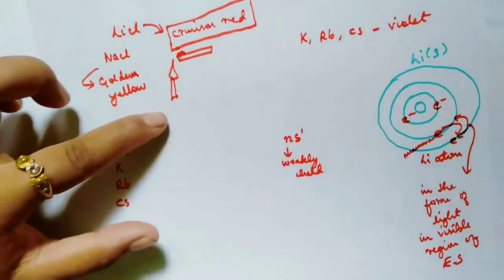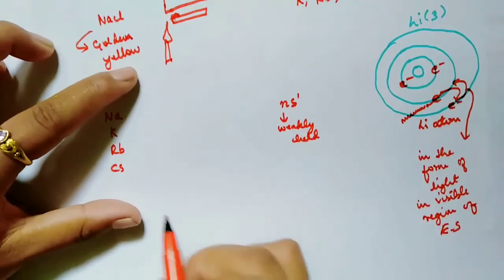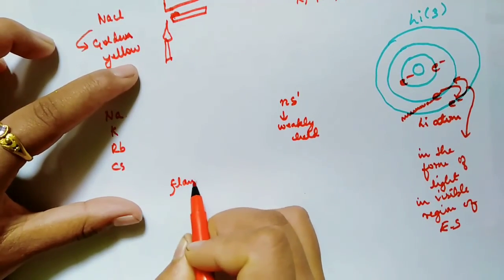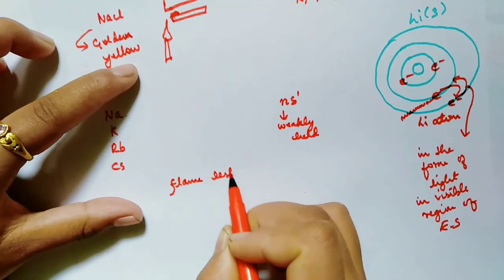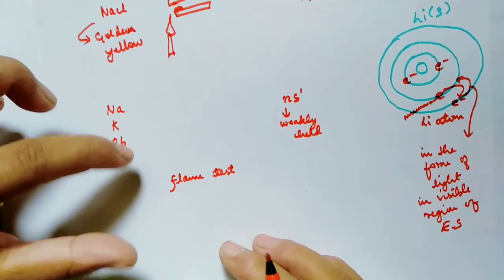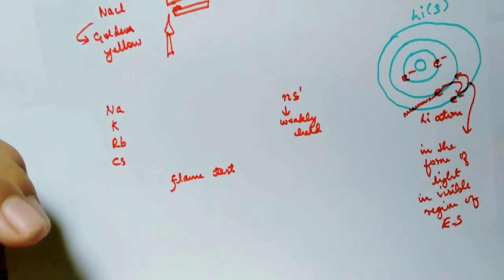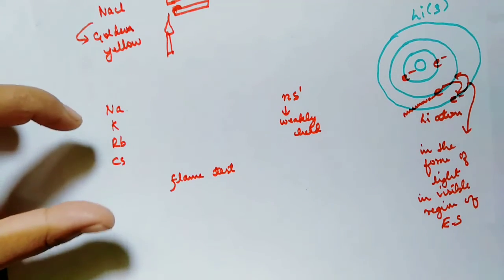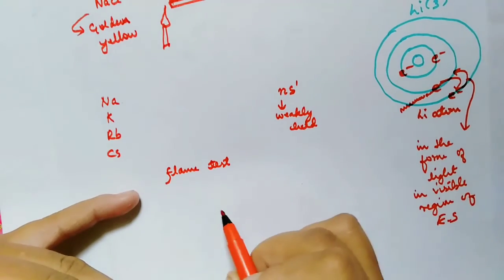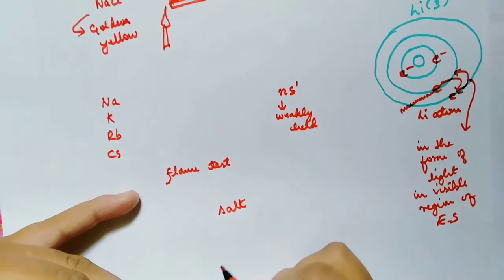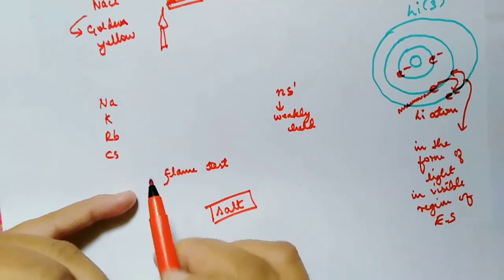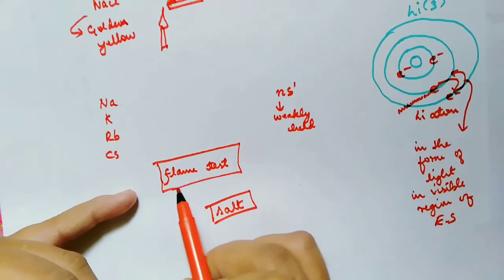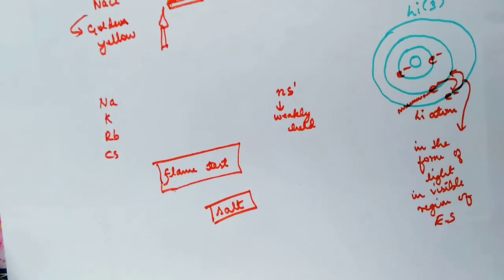This type of test is known as the flame test. It is the most common test done in the chemistry lab when we want to test whether alkali metals are present in a given salt or compound. We perform this flame test in order to test the presence of these alkali metals in a given salt.